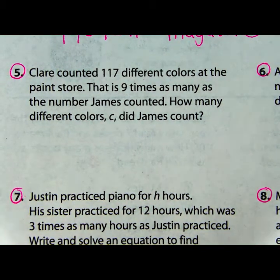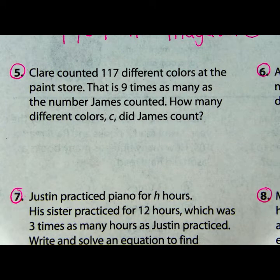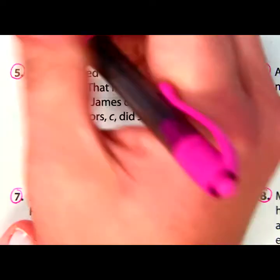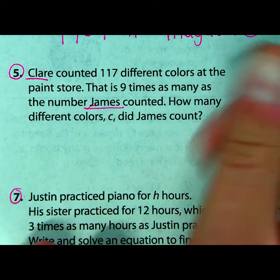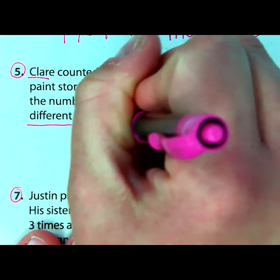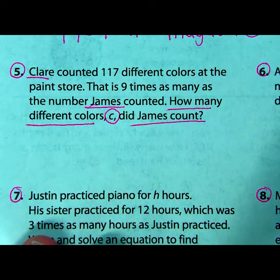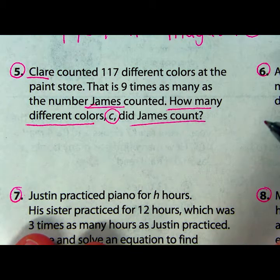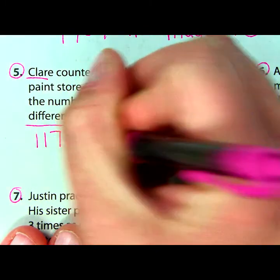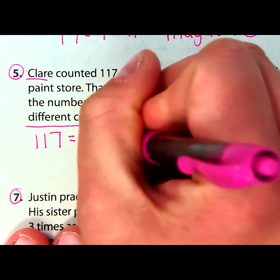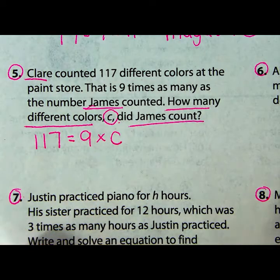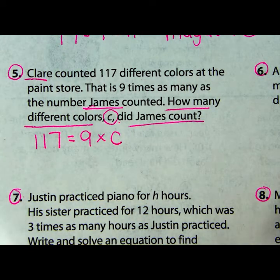Let's look at example number five. Claire counted 117 different colors at the paint store. That is nine times as many as the number that James counted. So we're comparing Claire to James. James is the unknown here because it says: how many different colors C did James count? So now I'm going to look back at this problem. Claire counted 117 different colors — that is, nine times as many as James, which is the letter C.